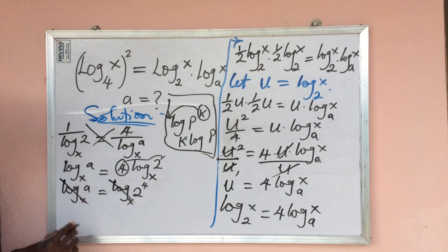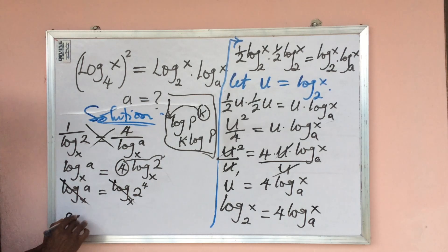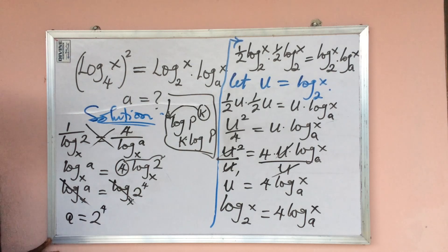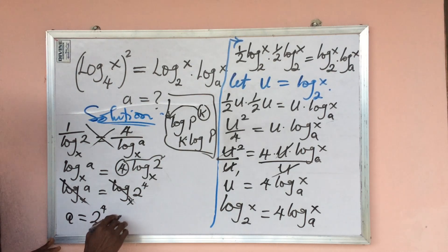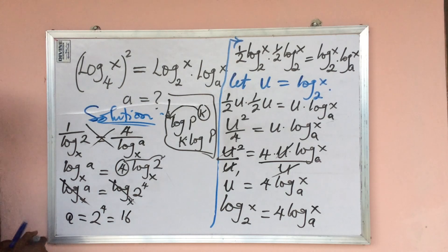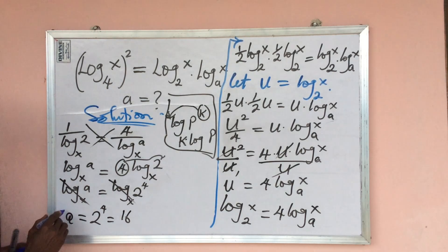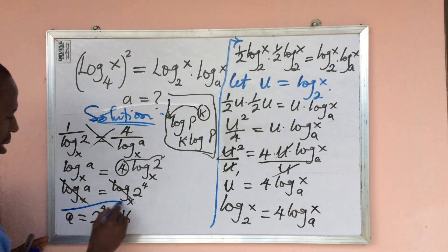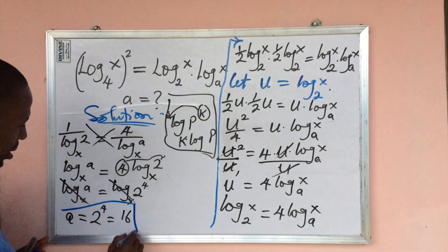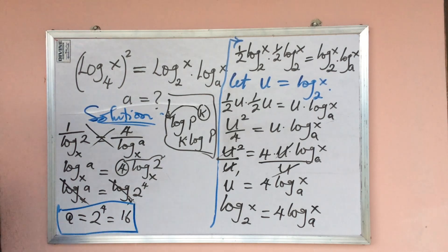Since the bases are the same, we equate the arguments: a equals 2 to the power of 4. And 2 to the power of 4 is 16. Therefore, a equals 16 — that is the value of a.